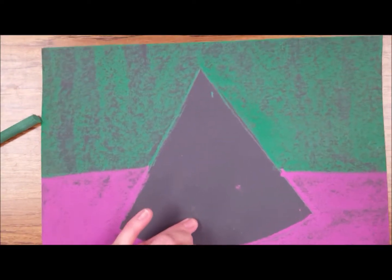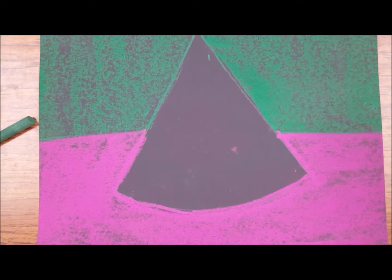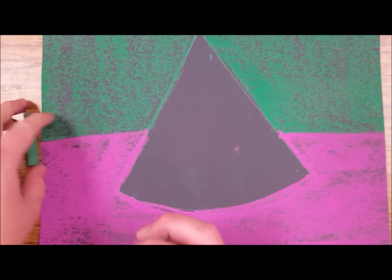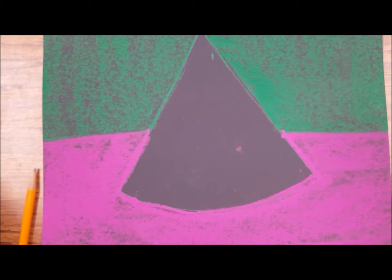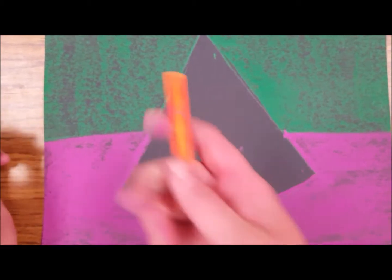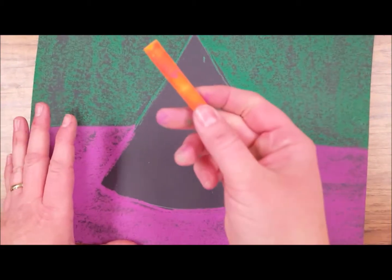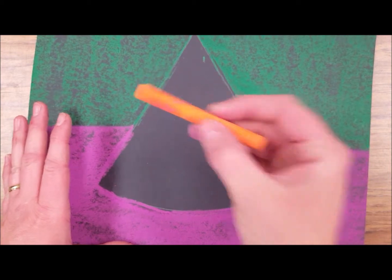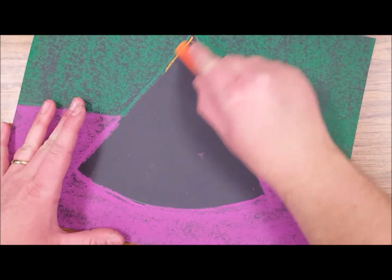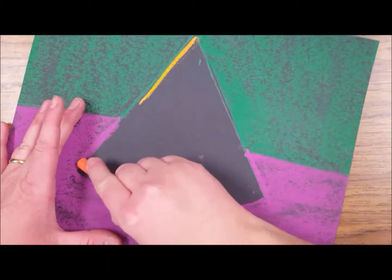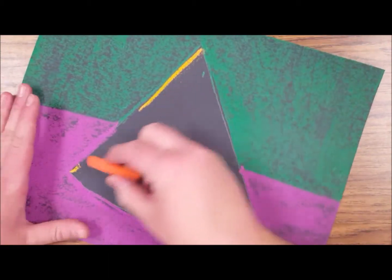Once you have the background and foreground shaded in, you're ready to do your actual 3D shape. For mine I'm going to choose orange because I feel like this is a bright color that will actually pop off the page. The first thing you want to do is actually shade the whole thing in one solid color.